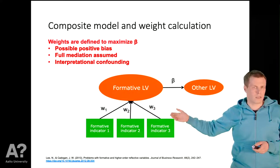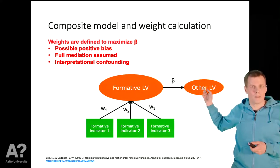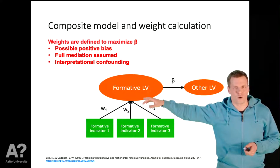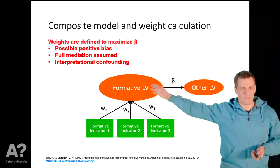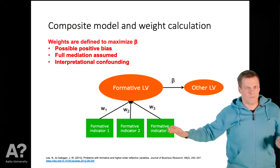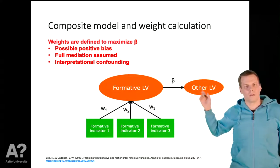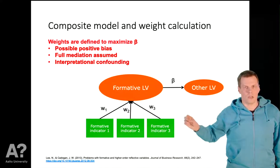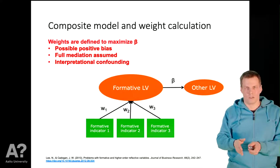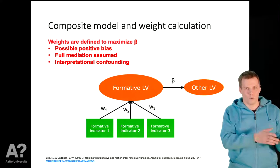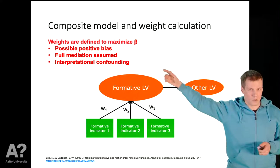There's also the assumption that if these formative indicators have any effect on the other latent variable, it must be fully mediated by the formative latent variable. Consider socioeconomic status as our formative latent variable, with education as one indicator, and we want to explain a child's education with the parent's socioeconomic status. Is it reasonable to assume that the parent's education has no other causal effect on the child's education than through full mediation through socioeconomic status? That is clearly unreasonable.